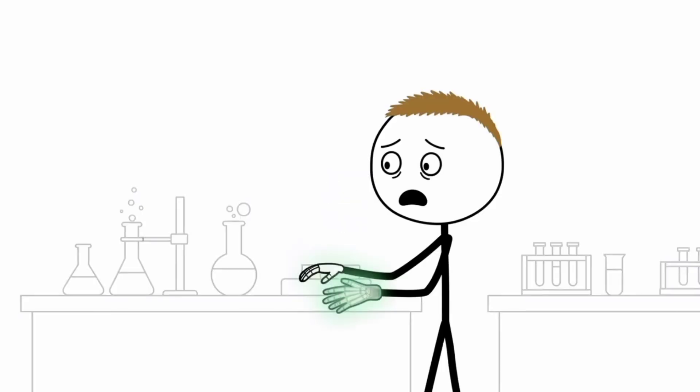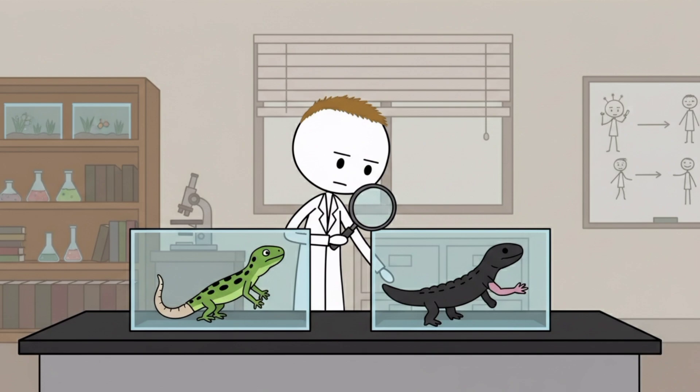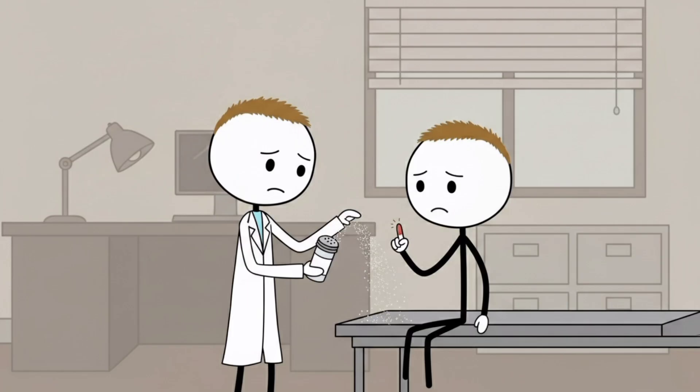Number five. Humans can actually regrow body parts now. Lizards regrow their tails. Salamanders regrow entire limbs. And humans just had to accept we got the short end of the evolutionary stick. Until scientists figured out how to hack our DNA and gave a guy back his fingertip using nothing but pig bladder powder.